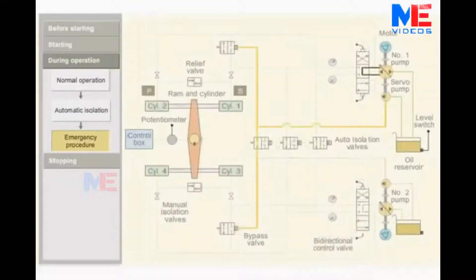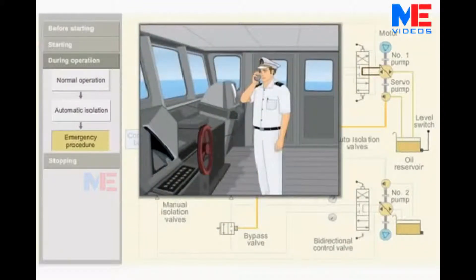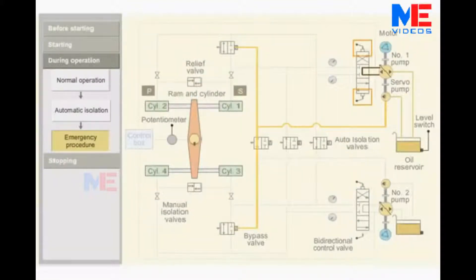Consider during the operation, the power supply fails in the control unit. In such an emergency, an alternative communication system is used to give the helm order to the steering compartment. The bidirectional control valve is actuated manually by using the levers.